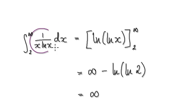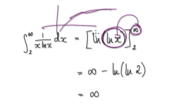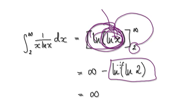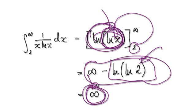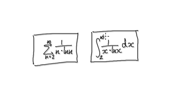If you put a very large number into ln(ln(x)), natural log of a very big number is very big, and natural log of that is also very big. Then subtract the value at 2: ln(ln(2)) is a finite number. So the upper limit goes to infinity and the lower limit is finite — overall the integral diverges. Going back to the comparison, we now know the integral diverges, and therefore the series itself will diverge.